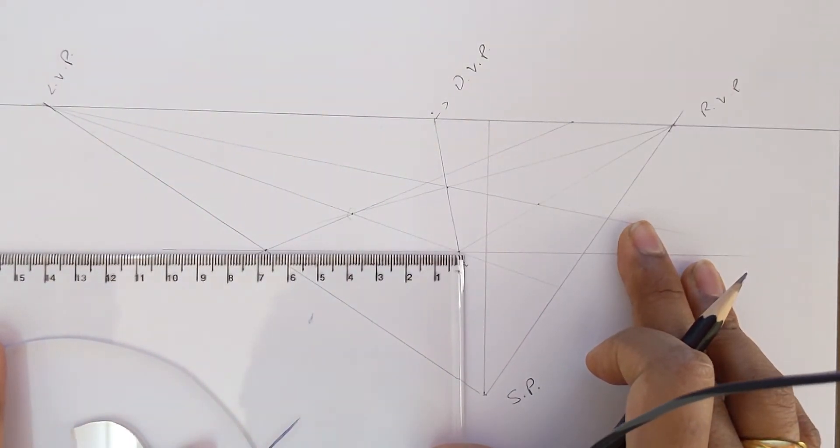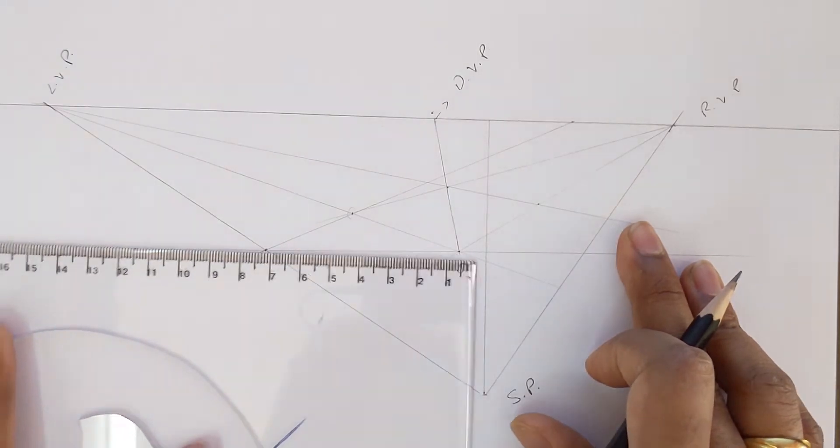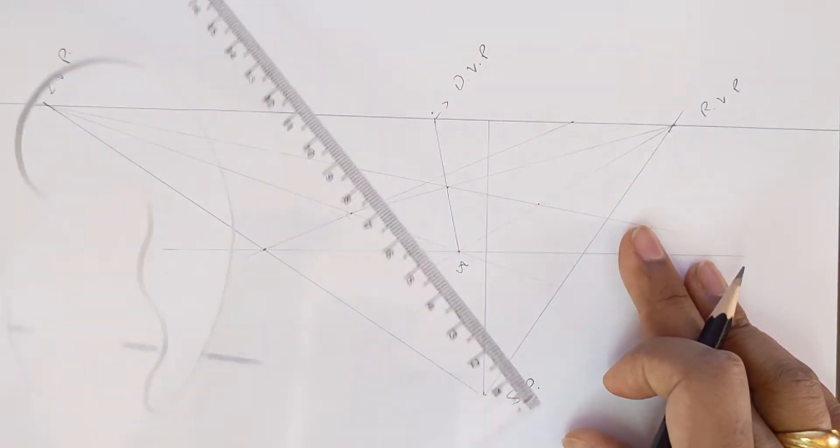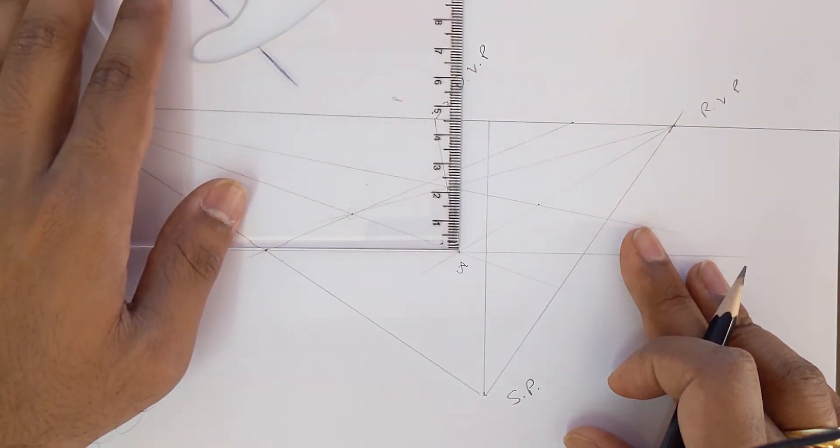Now from this new intersection point, we are going to measure the distance to point A. That is 6.7 centimeters, and we are going to translate the same.